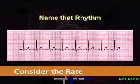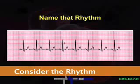Any pacemaker cells faster than 100 is tachycardia. So that's the rate. The rhythm looks to be about regular — the R waves are evenly spaced.